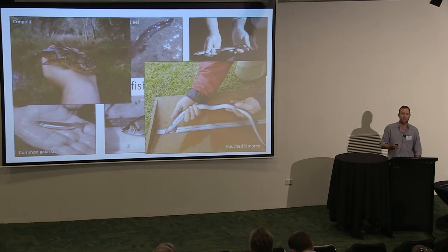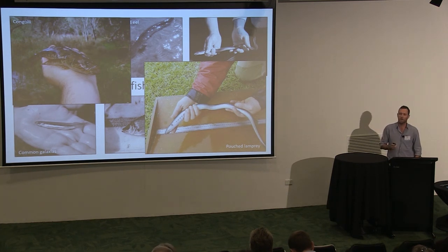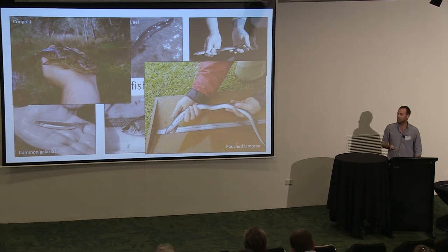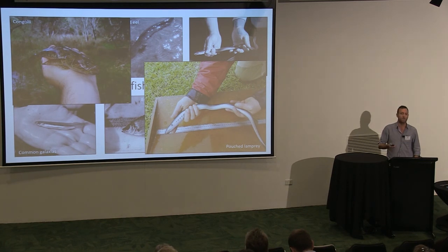Today I'm going to talk about two fish that we've done most research on in the last decade or so: the congoli and pouched lamprey. I'll speak about them because they represent opposite forms of diadromy, they've got different scales of life history, and through our research we've really found out ways in which we think flow can be delivered and infrastructure managed to support their migration and populations.